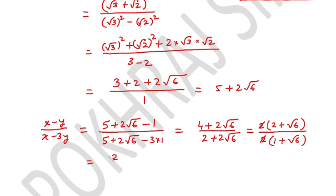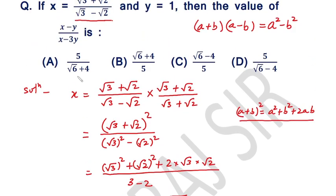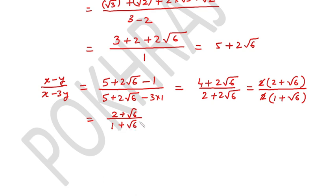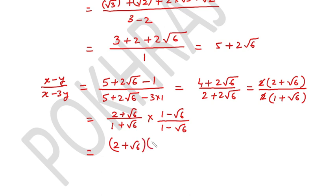After cancelling the common factor of 2, we get 2 plus root 6 over 1 plus root 6. However, none of the options match this form directly, so we rationalize again by multiplying by 1 minus root 6 over 1 minus root 6. The denominator becomes 1 squared minus 6, which is 1 minus square root of 6 over 1 squared minus 6.